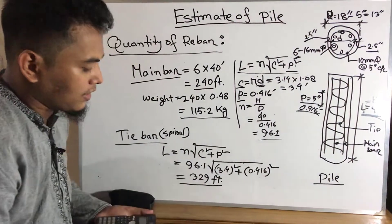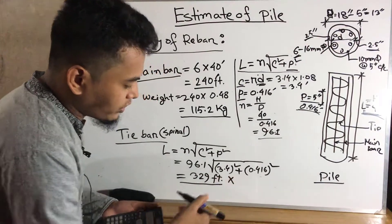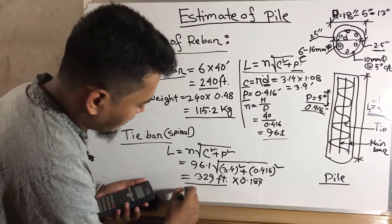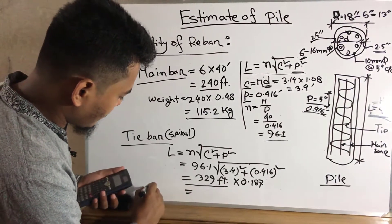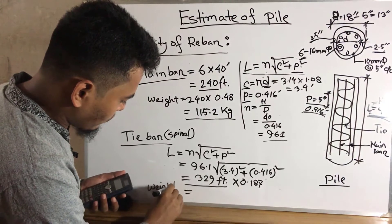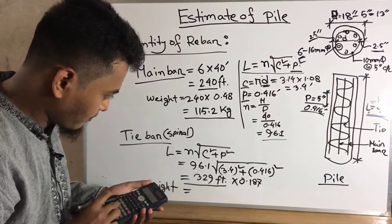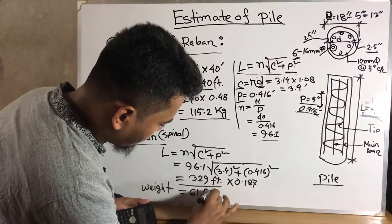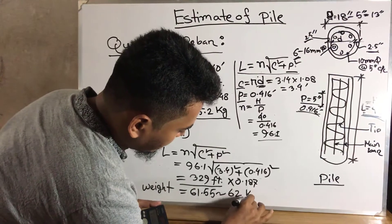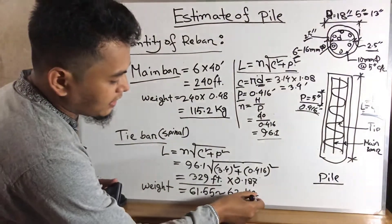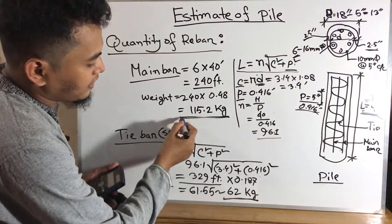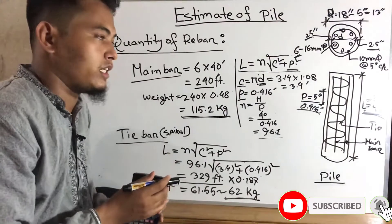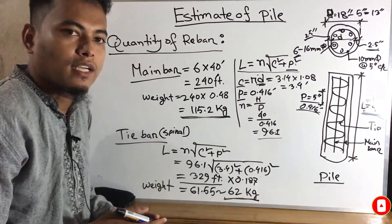The unit weight of 10 mm diameter bar is 0.187 kg per feet. So the total weight of the spiral tie bar = 329 × 0.187 ≈ 61.55, approximately 62 kg. This is the weight of the spiral tie bar, and 115.2 kg is the weight of the main bar. This completes the estimation of the full pile. Thank you for watching. See you next time.